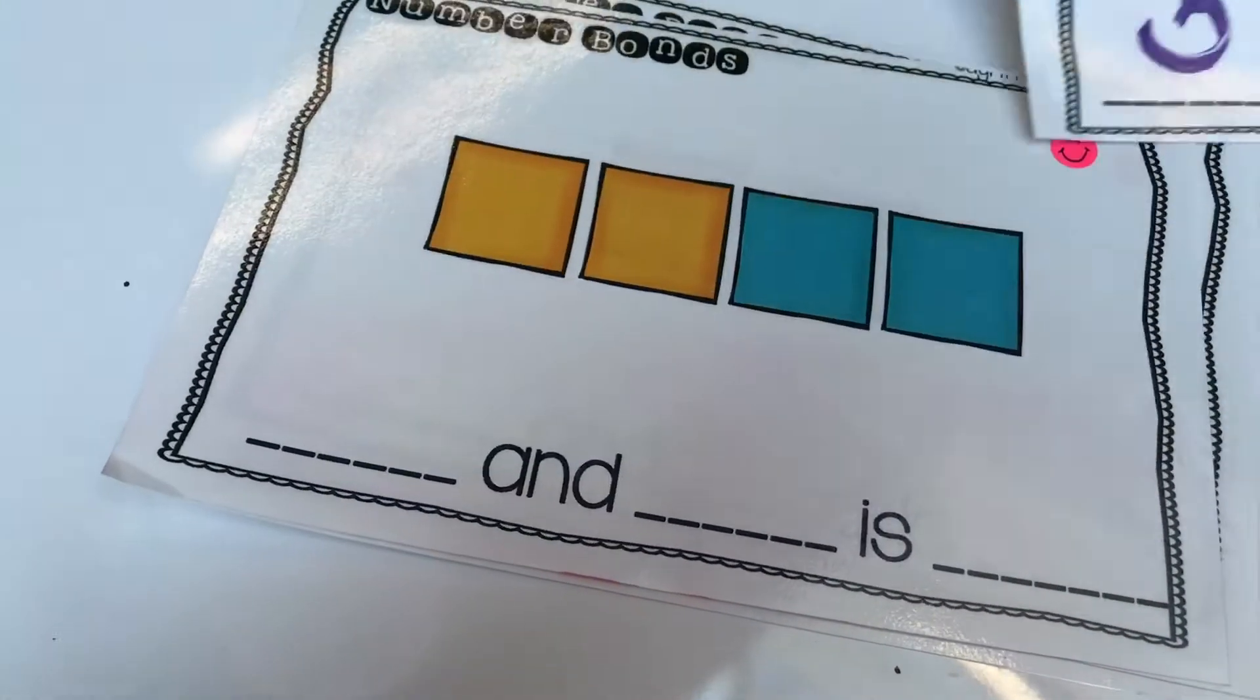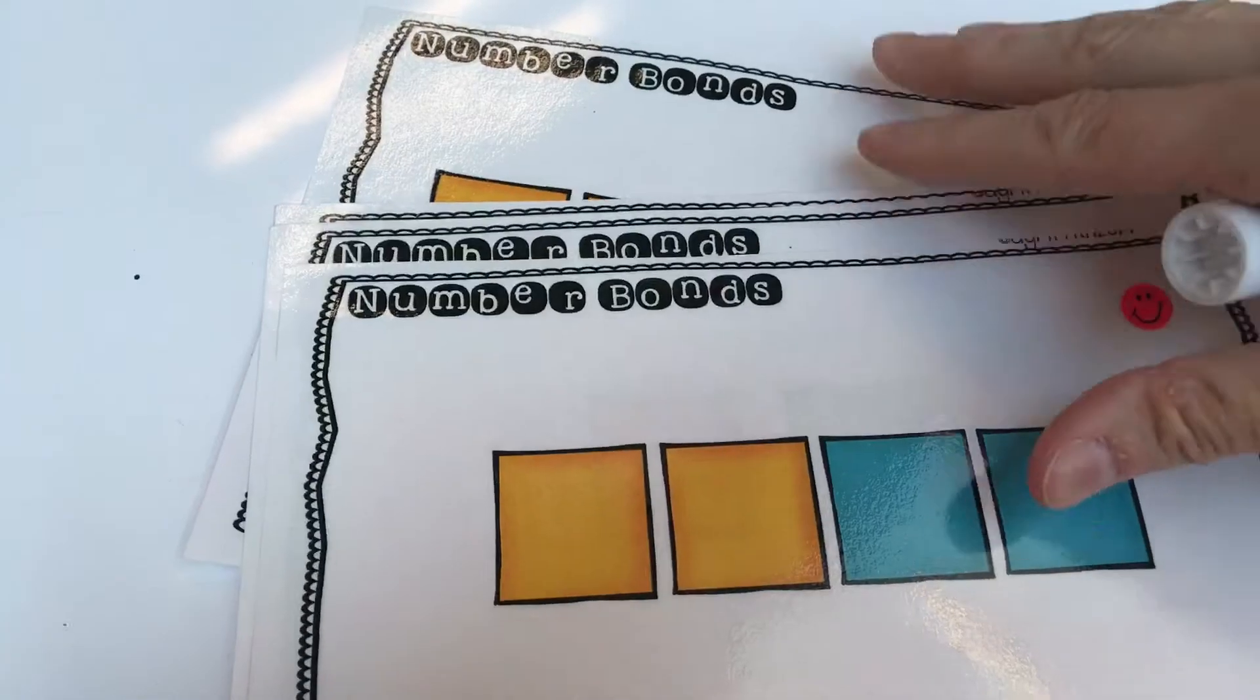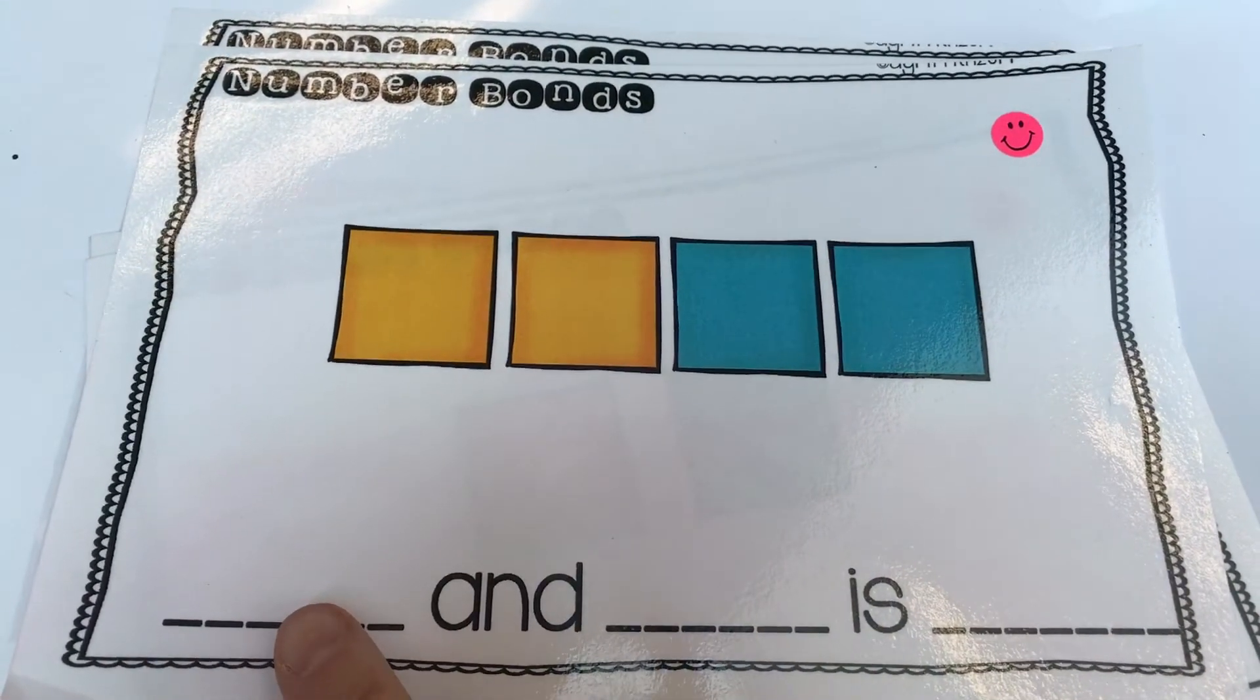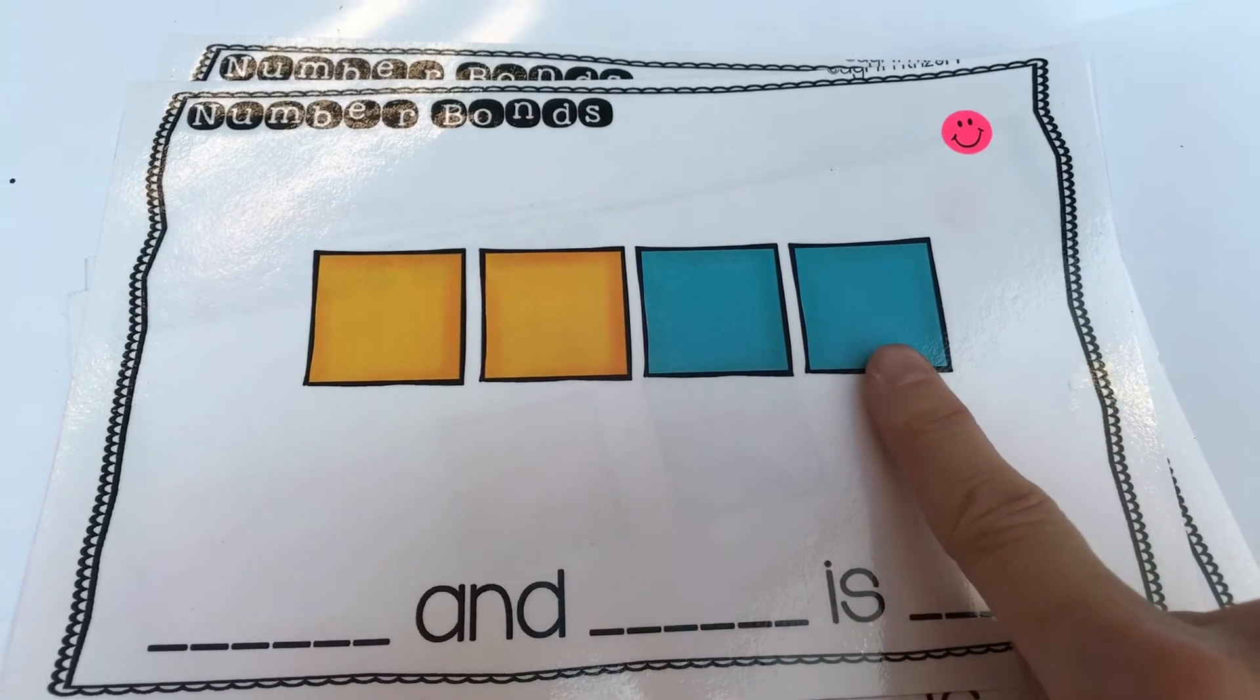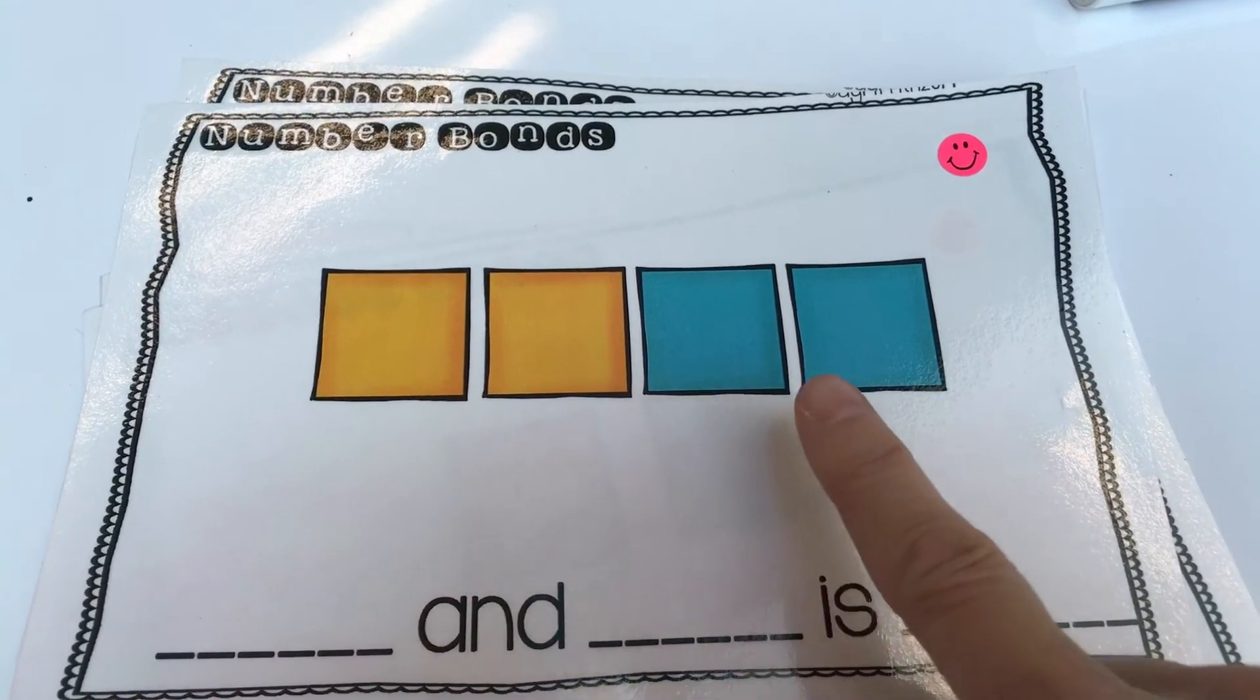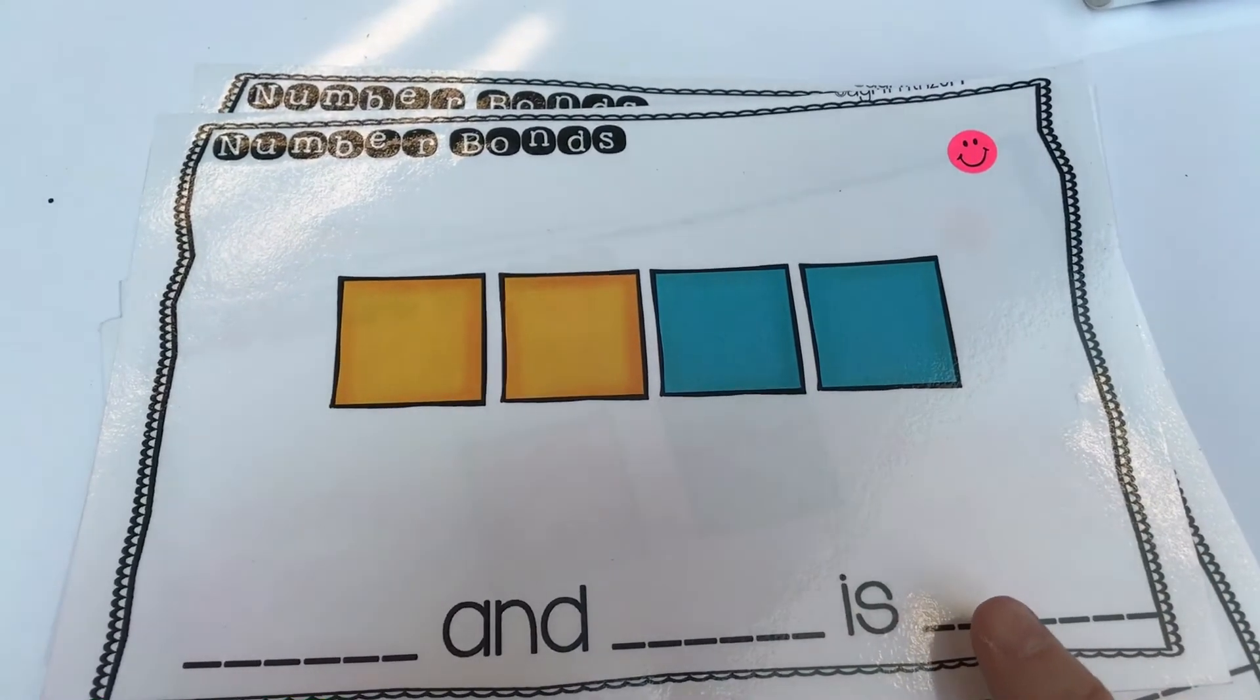Okay, you're going to put that one aside and you're going to do the next one. So remember what you're going to do. You're going to count the yellows, write that number here. Count the blues, write that number here, and then you're going to count all of the squares and write that number there. Have fun.